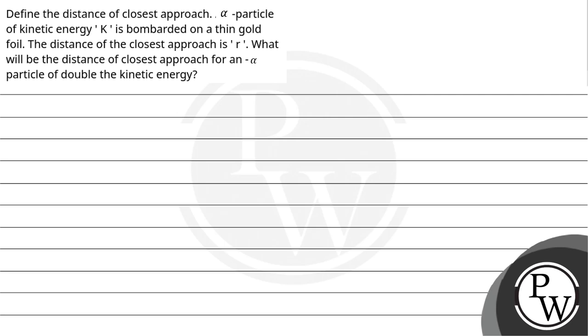So let's read the question. Define the distance of closest approach. An alpha particle of kinetic energy K is bombarded on a thin gold foil. The distance of closest approach is r. What will be the distance of closest approach for an alpha particle of double the kinetic energy?